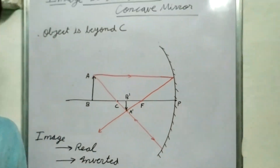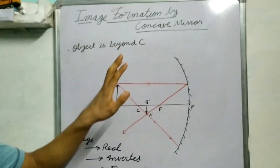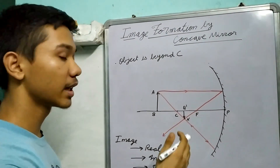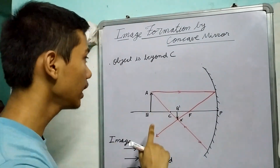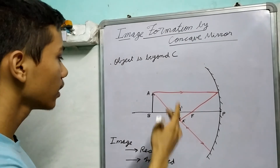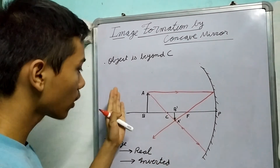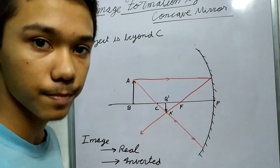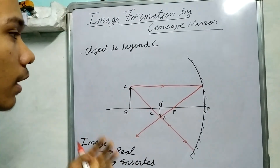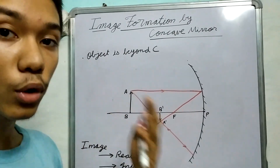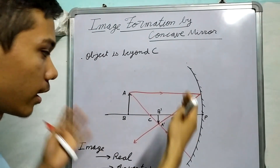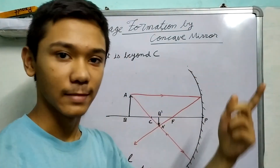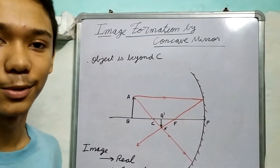So in this video we have learned two cases: what will happen if the object is at infinity, and what happens when the object is somewhere closer to the mirror, beyond the center of curvature. In the next video, we will see two more cases. So let us meet in the next video. Bye.